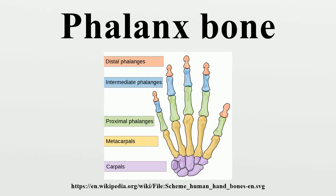The phalanges are digital bones in the hands and feet of most vertebrates. In primates, the thumbs and big toes have two phalanges while the other digits have three phalanges. The phalanges are classed as long bones.